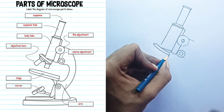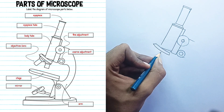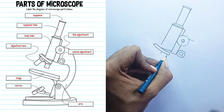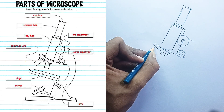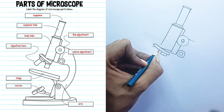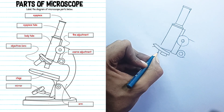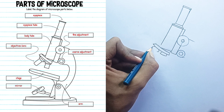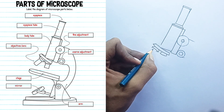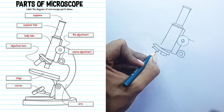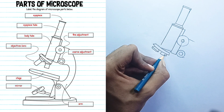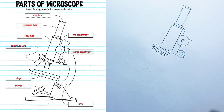Arm: this is the curved or angled part that connects the head, containing the eyepiece and objective lenses, to the base of the microscope. It's the part you grasp when carrying or moving the microscope, providing stability and support for the upper optical components.